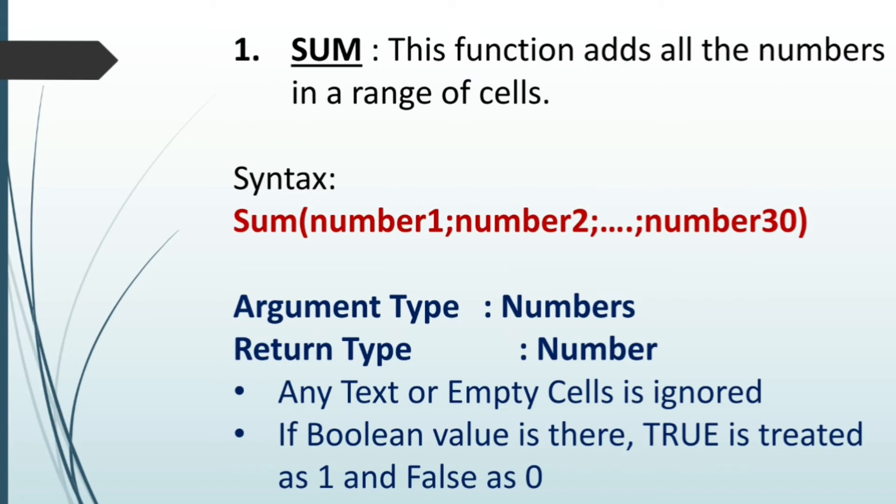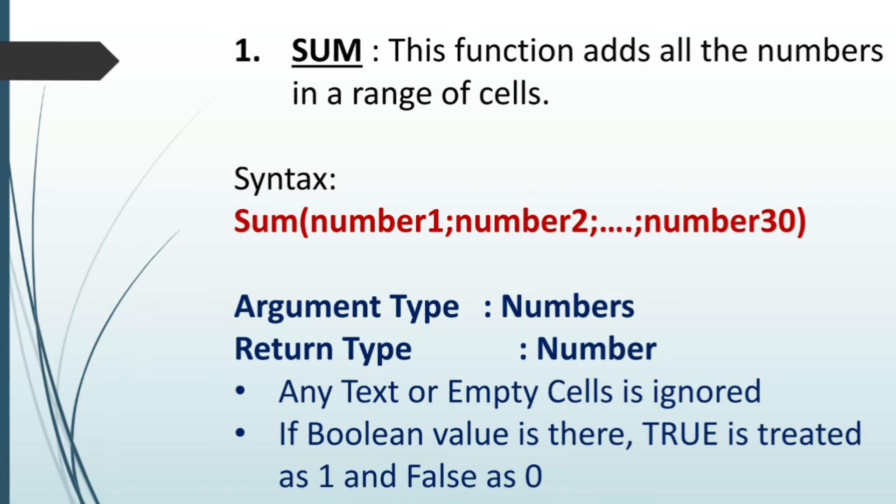Now we would study some of the functions commonly used in spreadsheet. The first such function is sum. This function adds all the numbers in a range of cells. Means, it would add whatever numbers are passed to the function as the arguments. This function accepts numbers as the arguments and the return type is also a number. If any text or empty cell is entered as an argument, it is ignored.